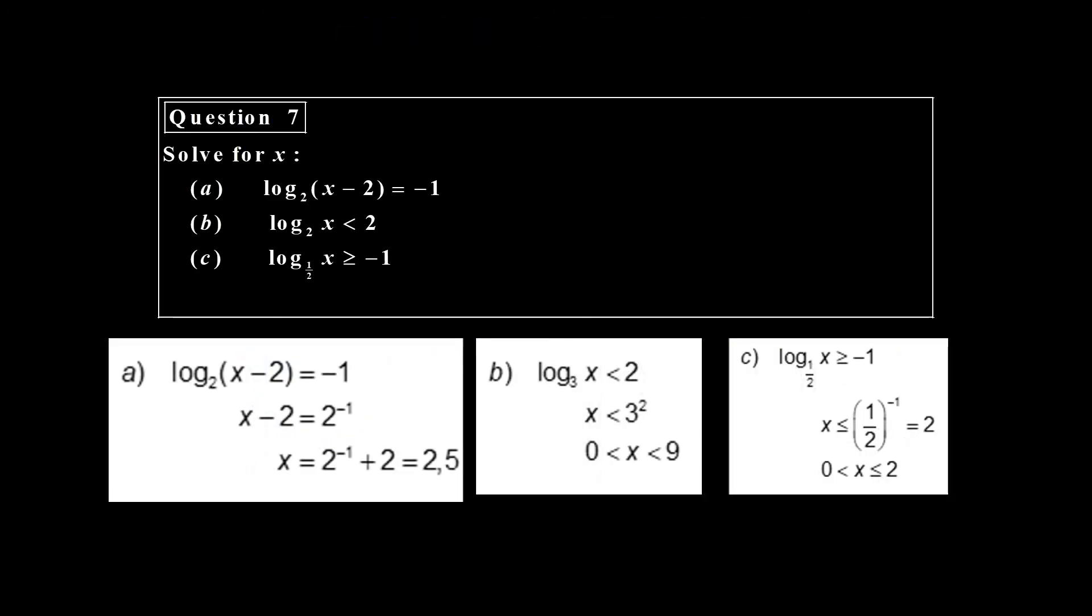Question seven. We have to solve these logarithmic equations. You can see there are three different ones: one is an inequality with a base greater than one, and then we have another one with a base less than one. Those are the three solutions. Again, you can pause.